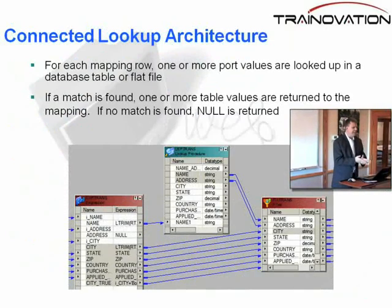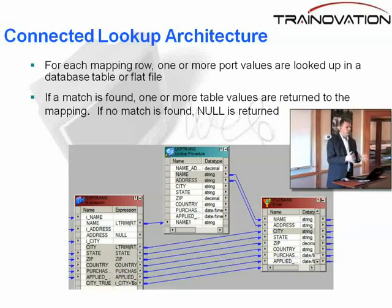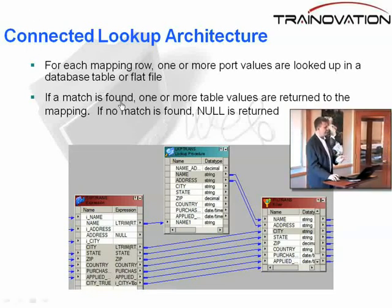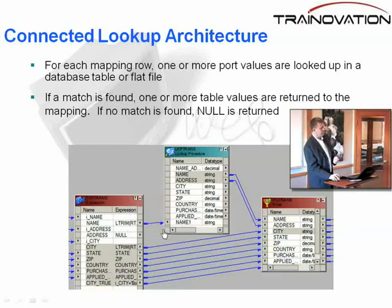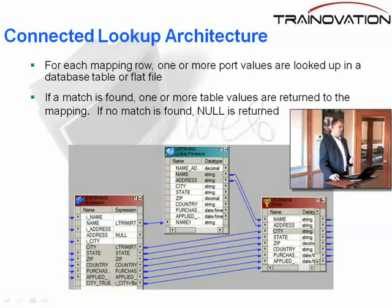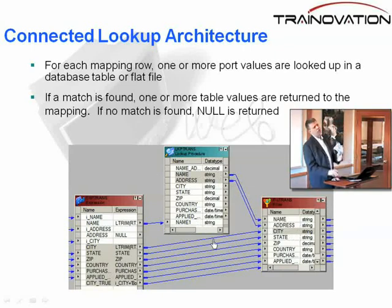Connected lookup architecture basically means that for each row, at least one field going into the lookup is hooked up as indicated in the mapping, and you have at least one field or more going downstream from the lookup. This is what we call a connected lookup, also known as an in-stream lookup.